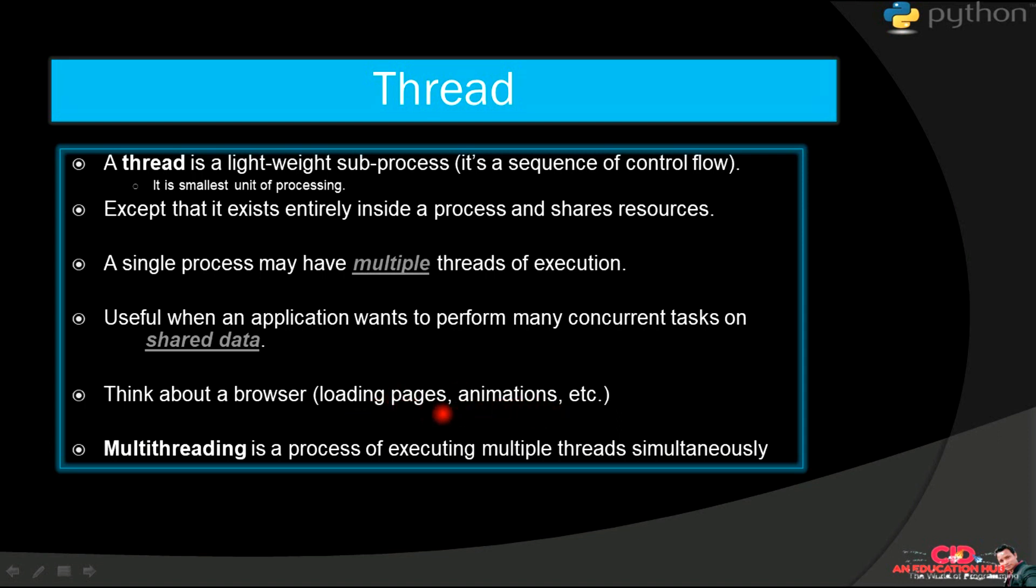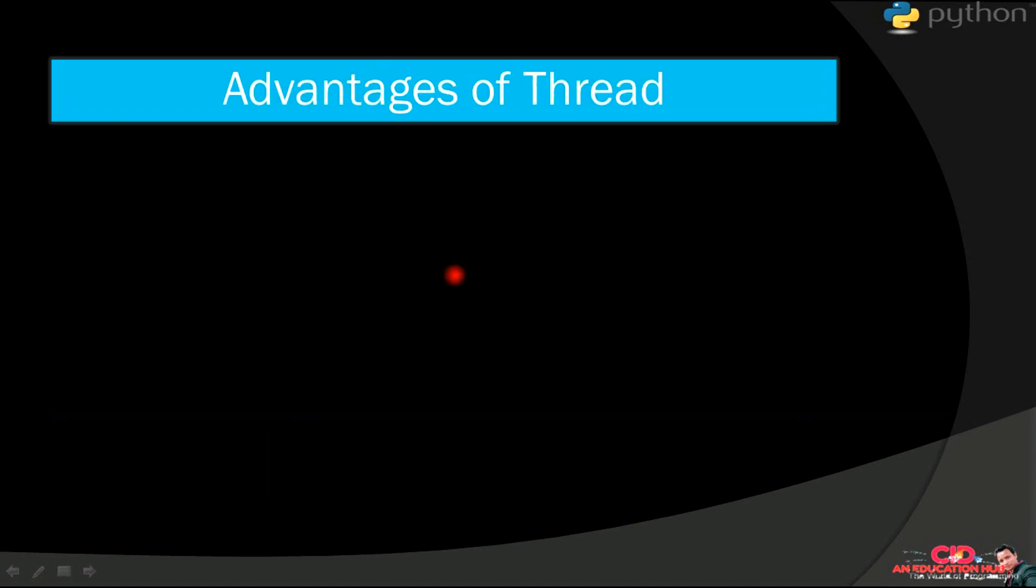Multithreading is a process of executing multiple threads simultaneously. Suppose loading some pages and animation or hover effects, etc. are multiple threads. Then you can run all these threads concurrently, and if you are running all the threads concurrently it is called multithreading.